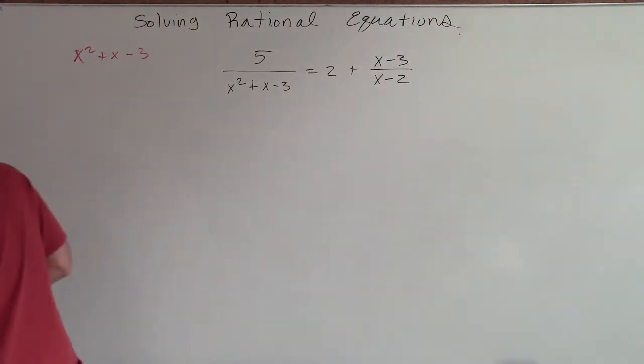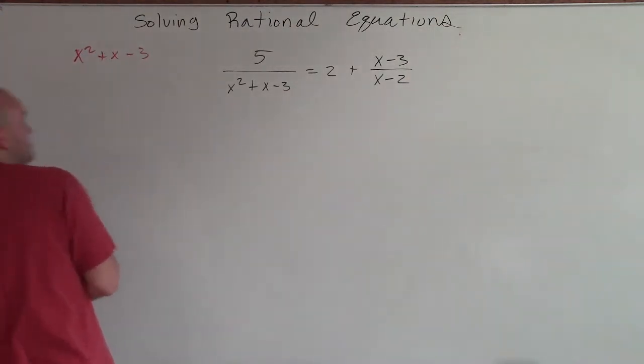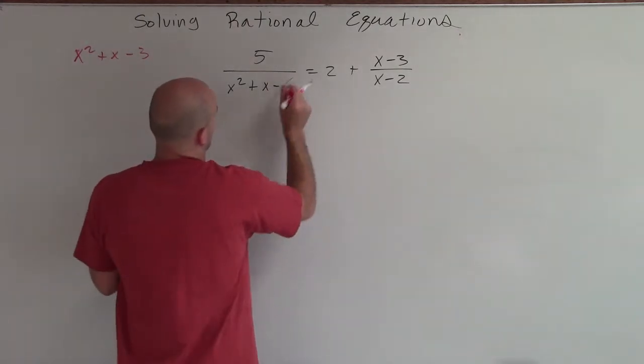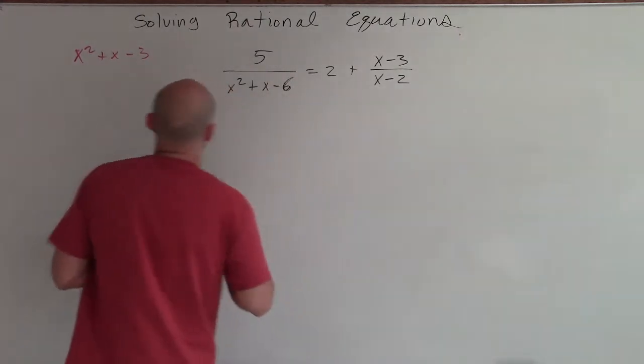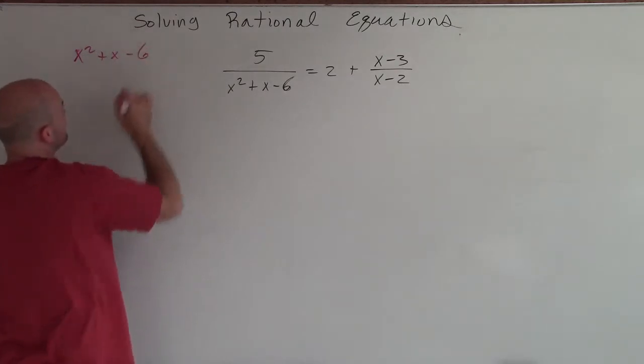Actually, the problem is written incorrectly. I believe that is x squared minus 6. Yes, it is. So that's a minus 6. Therefore, we know that this can be factored as x plus 3 times x minus 2.